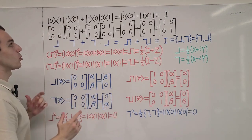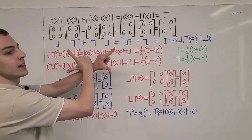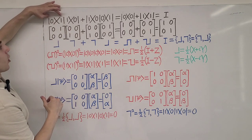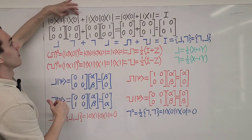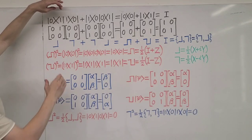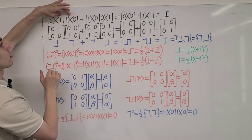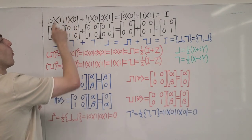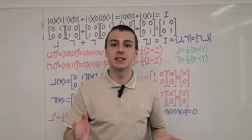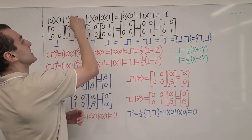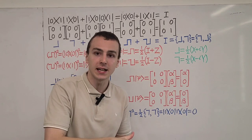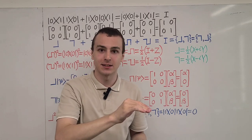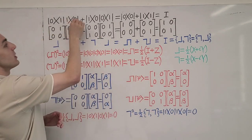But if we switch the order around and we first have a ket and then a bra, that can be used to construct an operator. So this combination is an operator and this combination is an operator. But if we group them differently and consider the elements in the middle, that is an inner product — just a complex number. These labels of 0 and 1 are just labels for the two states. We can think of the 0 state as corresponding to the ground state and the 1 state as the first excited state.